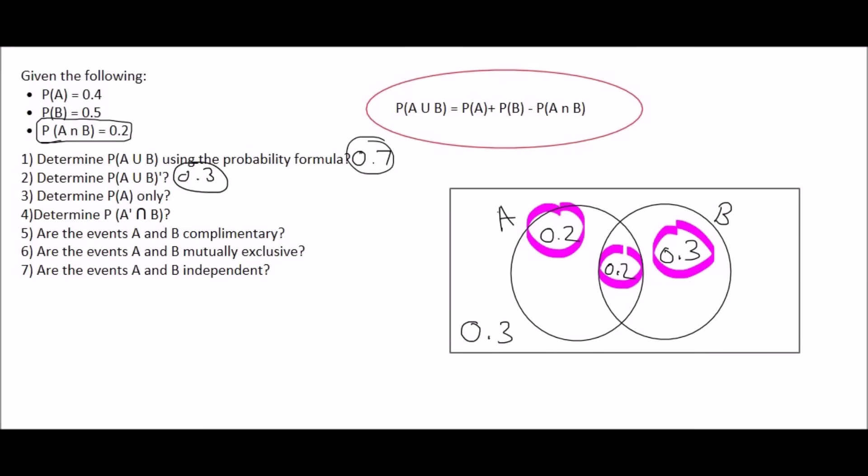Now, number 3 says, what is the probability of A only? Well, now we can see A only. That's this part over here. And so that's 0.2. But if we hadn't drawn the Venn diagram out, you might have been tempted to say 0.4.